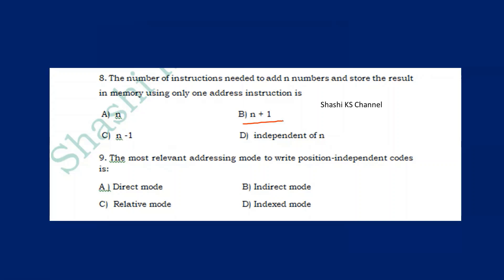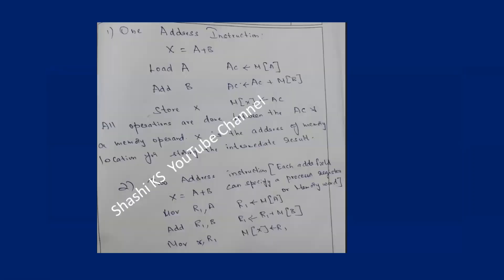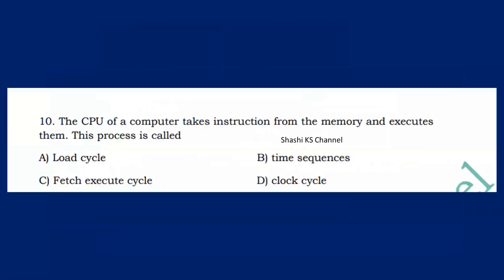The most relevant addressing mode to write position-independent code is relative mode. Next: the CPU of a computer takes instructions from memory and executes them — this process is called the fetch-execute cycle. The answer is option C.